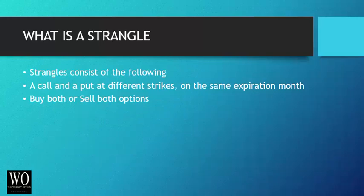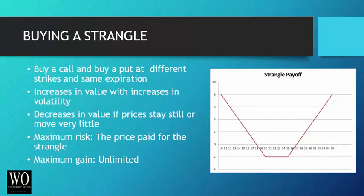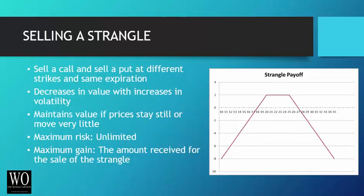What is a strangle? A strangle consists of a call and a put at different strikes in the same expiration month, still on the same stock. You would either buy both options or sell both options. As you can see, the payoff graph looks a little different because the strikes are different this time. If you buy a call and buy a put at different strikes on the same expiration, you've bought a strangle. This position increases in value as volatility or stock price movement increases. It decreases in value if prices stay still or move very little. Your maximum risk is the price you paid for the strangle, and your maximum gain is unlimited because the call can go to infinity.